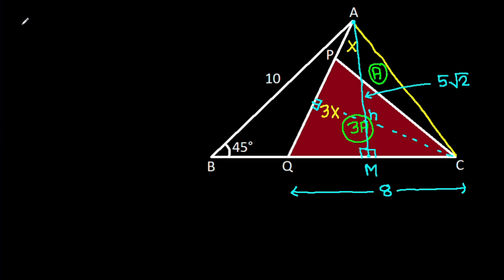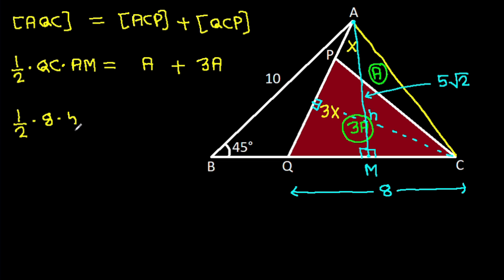Now, area of AQC is area of ACP plus area of QCP. And area of AQC will be 1 over 2 times base QC times height AM, which is 1 over 2 times 8 times 5 times root 2. This equals 4A.